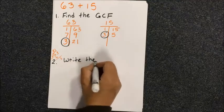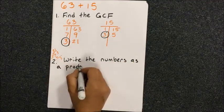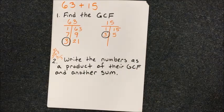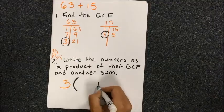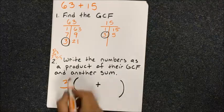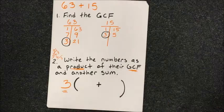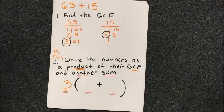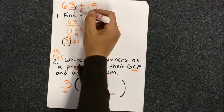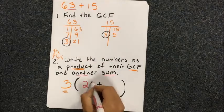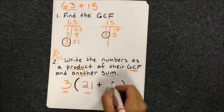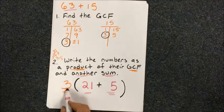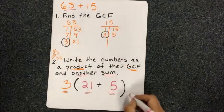We want to write the numbers as a product of their GCF and another sum. 3 goes on the outside, product means we're going to multiply, and the other sum goes on the inside. We go back to our original number of 63. 3 times 21 gives us 63, and 3 times 5 gives us 15. This all works out to give us our original numbers, so we are good to go.